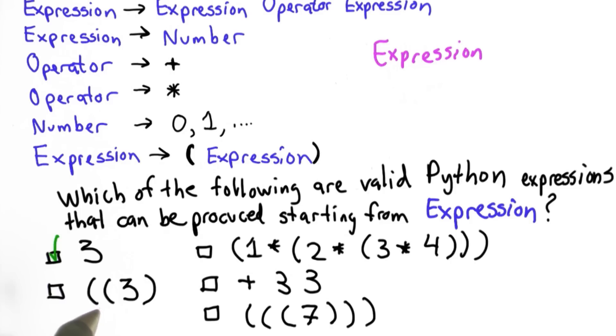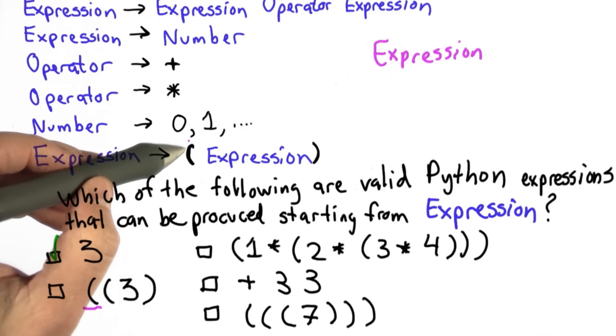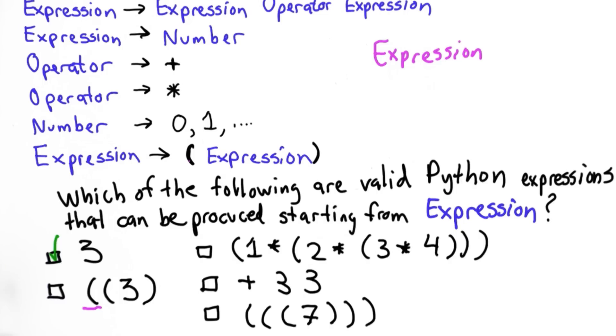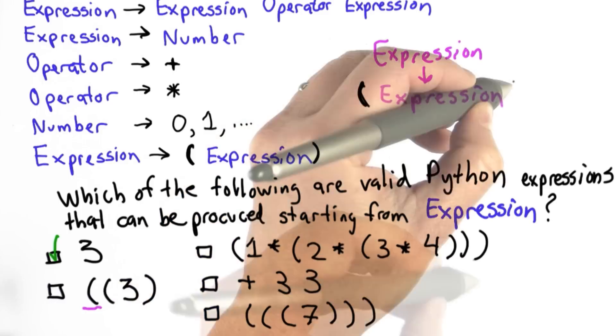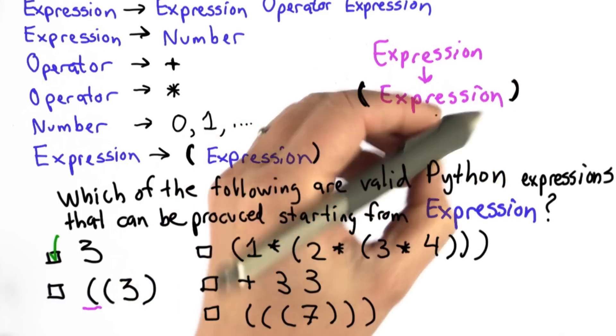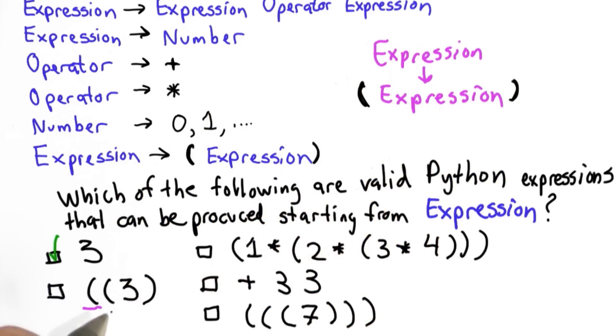Since the expression we're trying to match starts with a left paren, the only way to get a left paren is to eventually have this rule that replaces expression with left paren. When we use that rule, what we get is the left paren followed by expression. Now we have expression here. From here, we've matched the far left paren and the far right paren. What we have left is this.